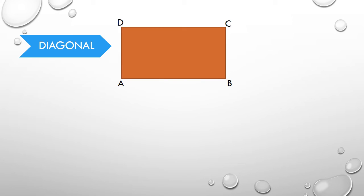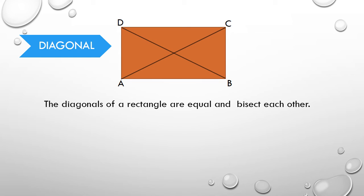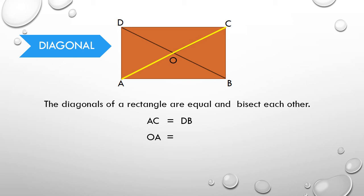Now, let us learn the diagonal property of a rectangle, for which we are going to consider the same rectangle ABCD. Let us draw the diagonals AC and DB. It is similar to a parallelogram — the diagonals of a rectangle are equal and they bisect each other. This is the small difference between a parallelogram and a rectangle: the diagonals of a parallelogram bisect each other, whereas the diagonals of a rectangle are equal and they bisect each other. If you take the intersection point as O, the length of OA equals OC, and the length of OB equals OD.